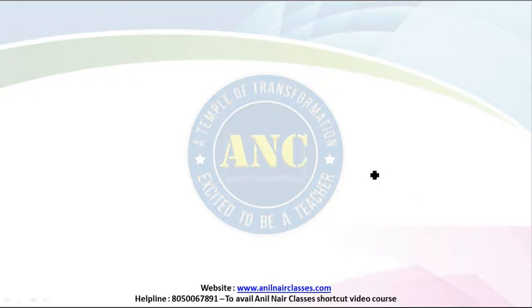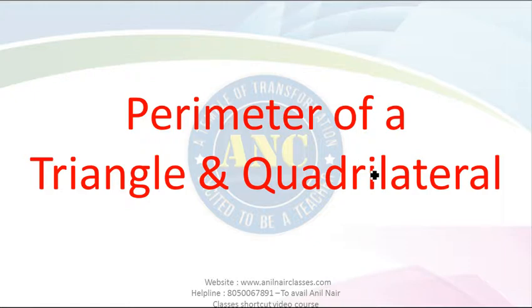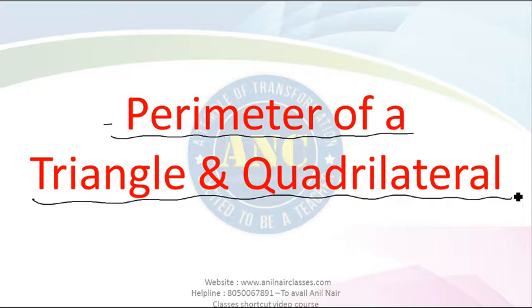After solving some questions on square and rectangle, let us now move on to finding the perimeters of triangle and quadrilateral. This is the topic we are discussing — perimeter of a triangle and a quadrilateral. Let us see some very good examination questions. We will also see which examination question was asked and solve it in the easiest way possible.